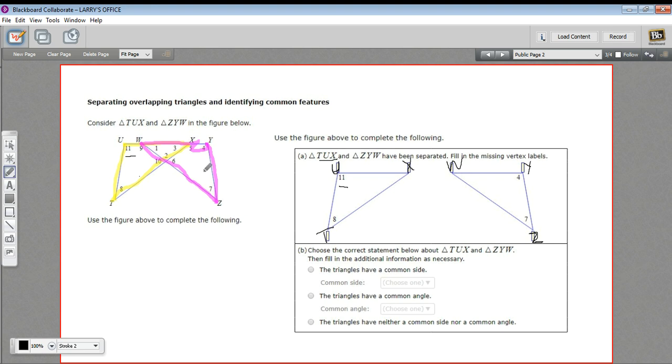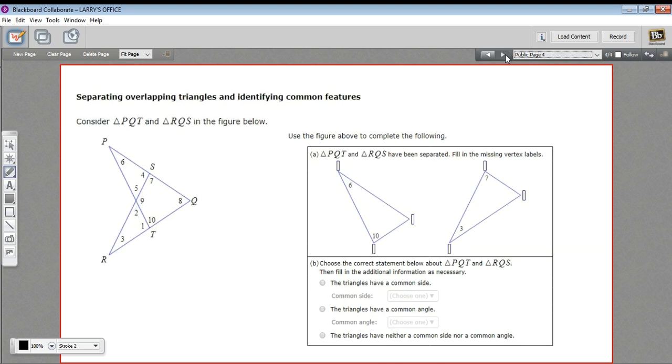We've got angles 11 and 8 labeled on TUX, and 4 and 7 on triangle ZYW. The other angles would be angle 1 here and angle 3 here, so none of those are in common. In this particular case, these two triangles have neither a common side nor a common angle. That's not always the case - let's look at one more.